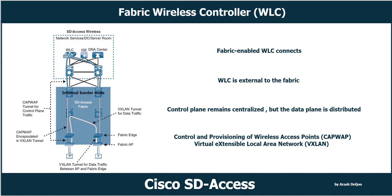Instead of forwarding all traffic of wireless clients to the wireless LAN controller, we forward them using VXLAN — Virtual Extensible LAN — directly to the destination. In SD Access, the wireless control plane remains centralized but the data plane is distributed using VXLAN directly from the fabric-enabled APs. These APs are fabric-enabled, and we have an SD Access deployment of wireless with the wireless LAN controller outside the fabric.